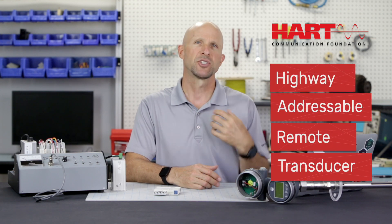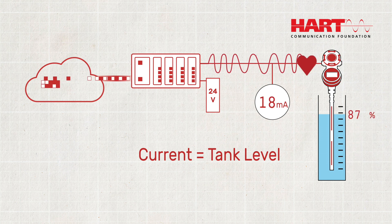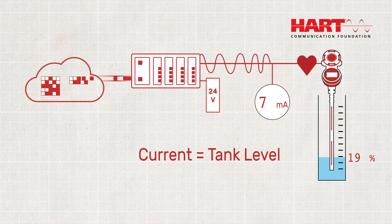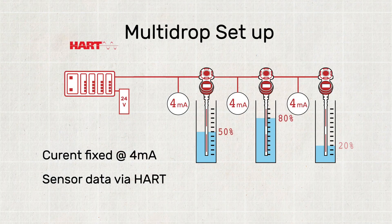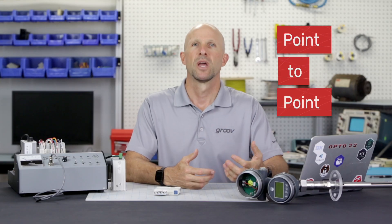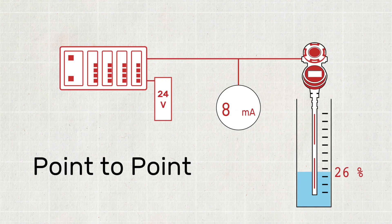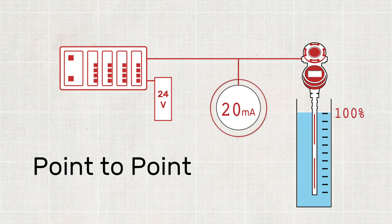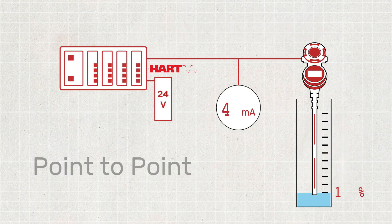Now, what about the HART communication protocol? HART is an acronym for Highway Addressable Remote Transducer. It's a digital signal that can share the same set of wires as that 4 to 20 milliamp signal. There are two modes of operation for HART. Multi-drop, where the current is fixed at 4 milliamps and you have more than one instrument or sensor on the loop. The other mode is called point to point. In this mode, the digital data is overlaid on a single instrument's analog signal, and we can set up the instrument to send one parameter via the analog signal and then request additional parameters via the digital protocol. This is the mode that we're going to be using this Magnetrol level transducer in.